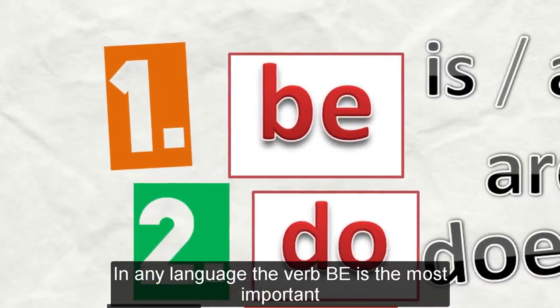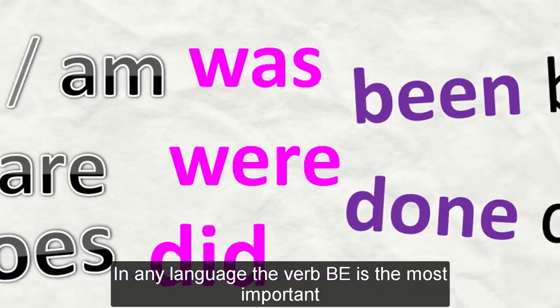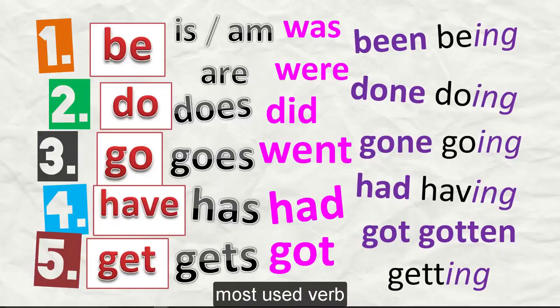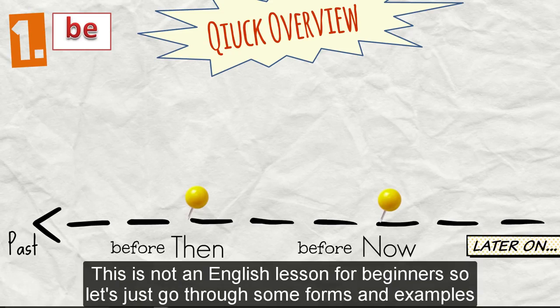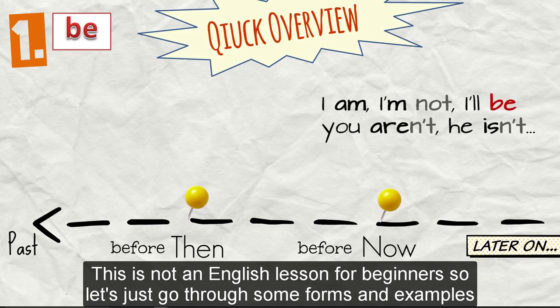In any language, the verb be is the most important, most used verb. In English, it has many forms. This is not an English lesson for beginners, so we'll just go through some of the forms and examples.